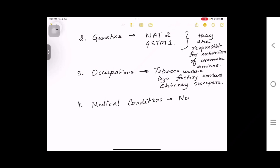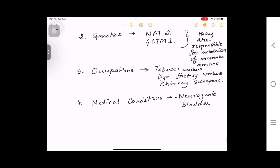There are certain medical conditions related to the bladder. First is neurogenic bladder. Second, if there is a prolonged indwelling catheter. Third, long-standing bladder calculi. Fourth, if there are recurrent urinary tract infections.